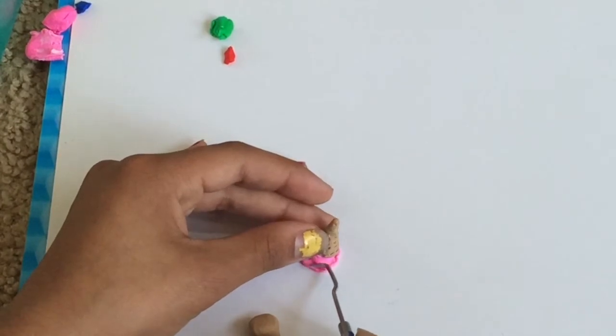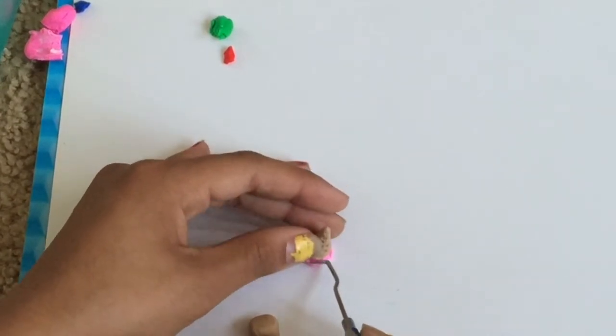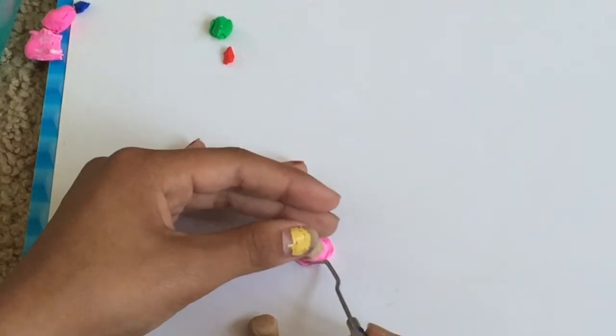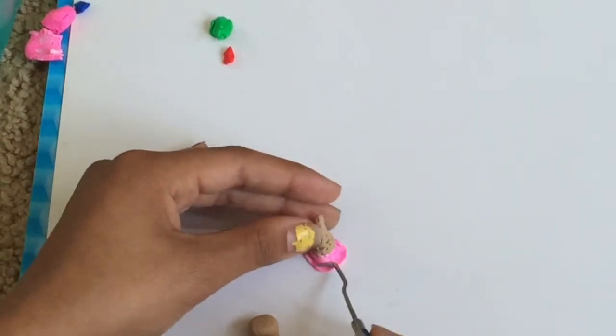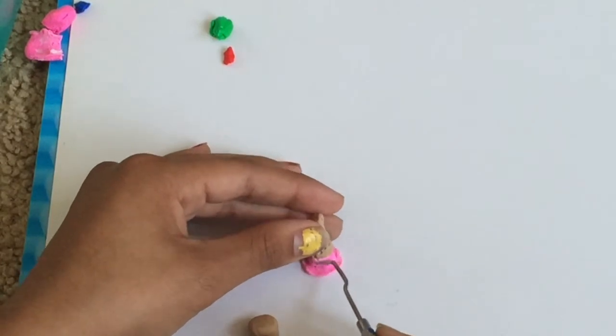There you go. So when you're done you're just gonna fix the edges because I accidentally kind of smashed it, but don't worry you can fix it, it's clay. And there we go, you have your beautiful ice cream cone.